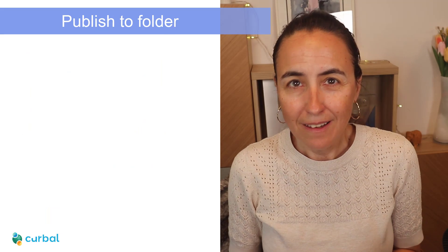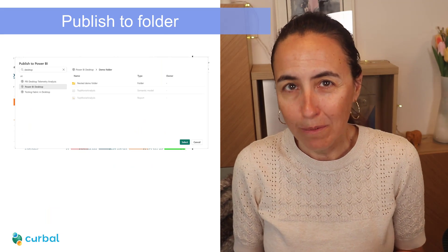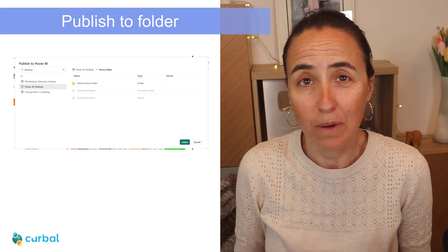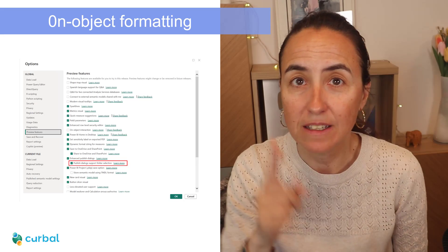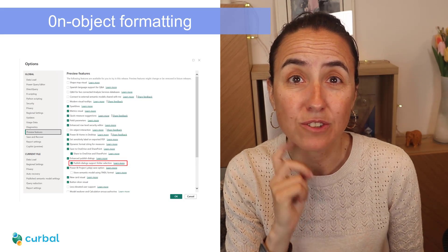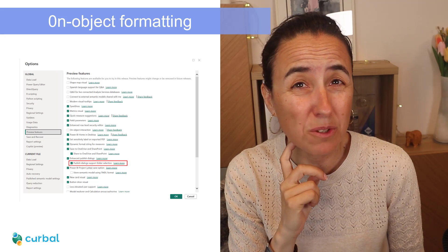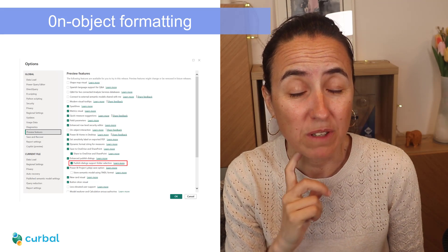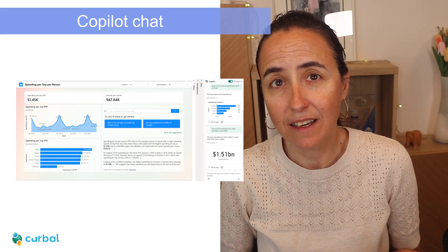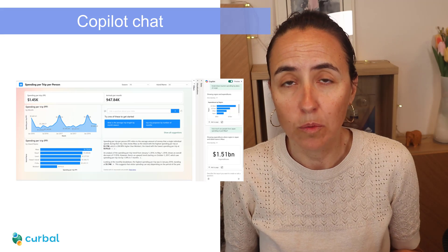Small multiples, waterfall, and matrix have got on-object formatting support. You can now publish to folders from Power BI Desktop — it is in preview though, so make sure you turn that on. Not sure why they would put that in preview.